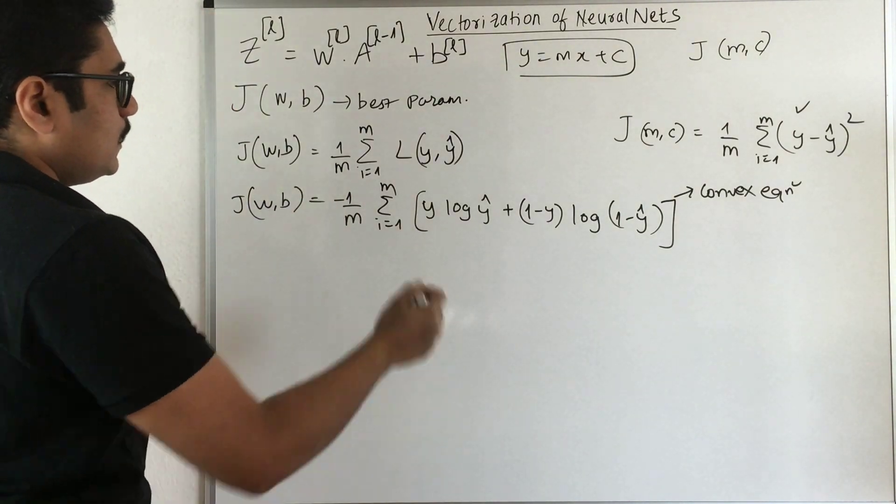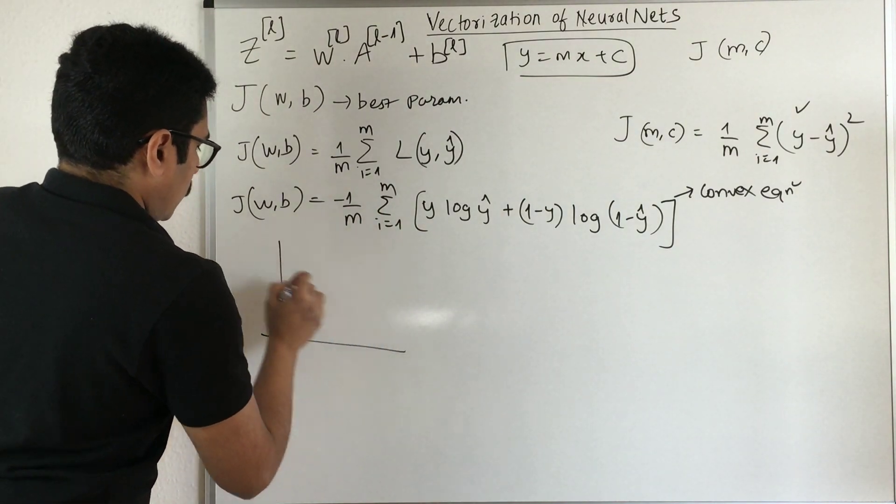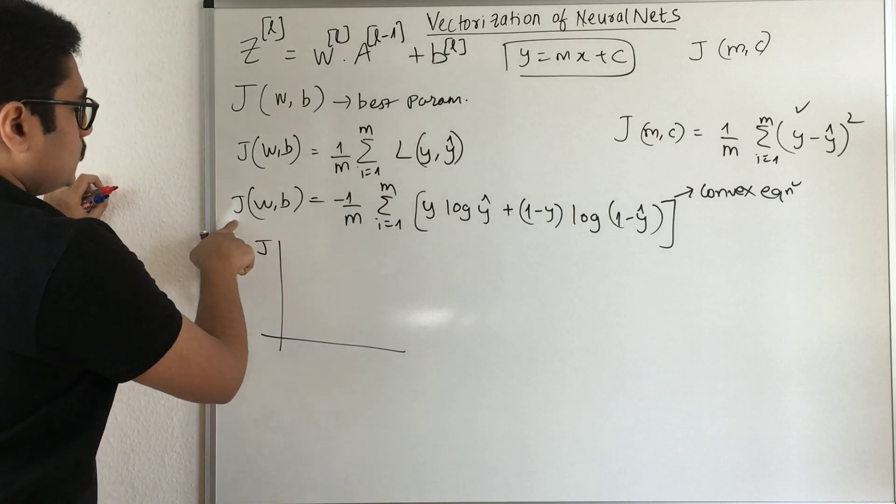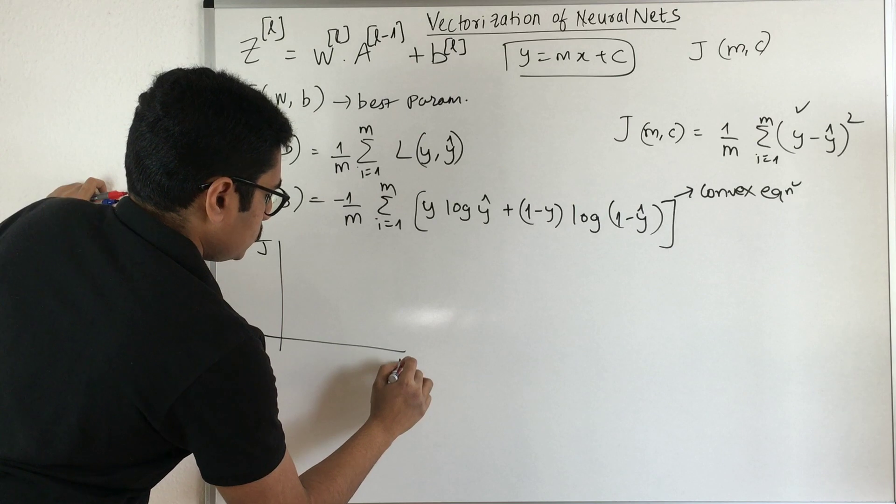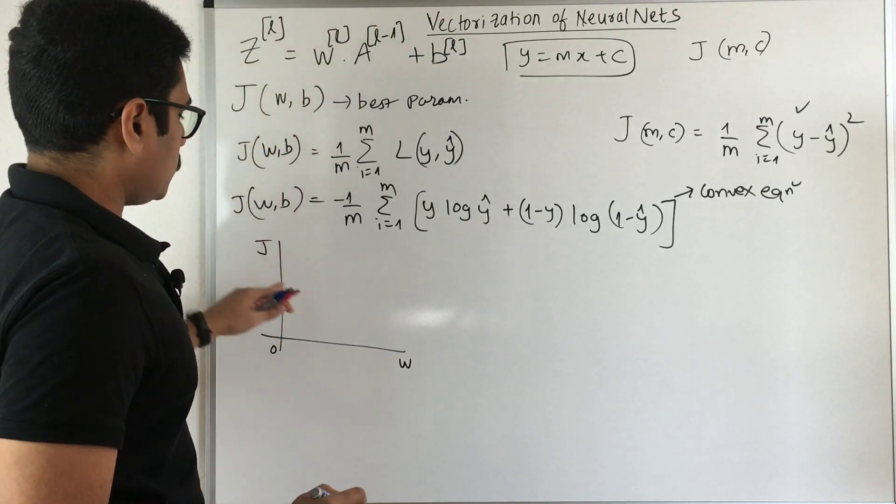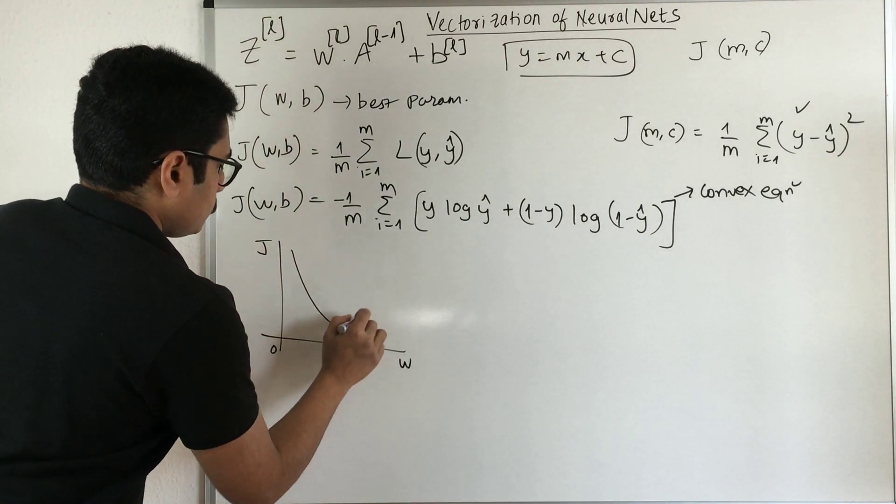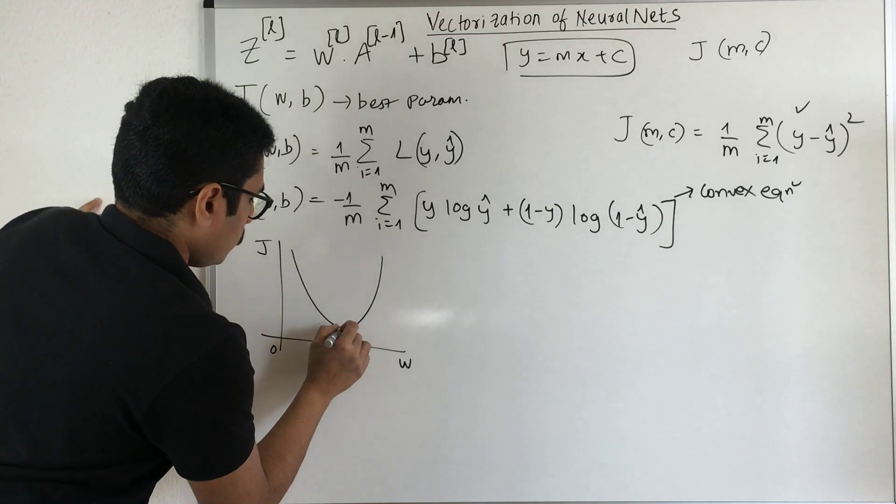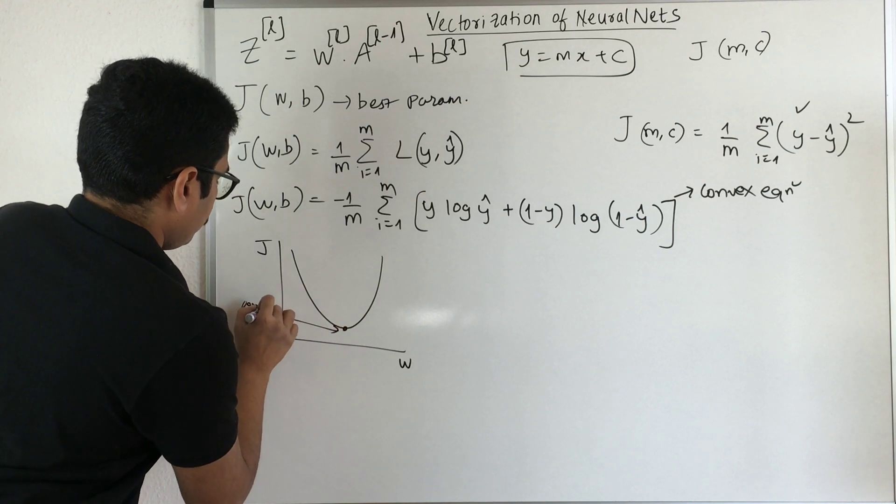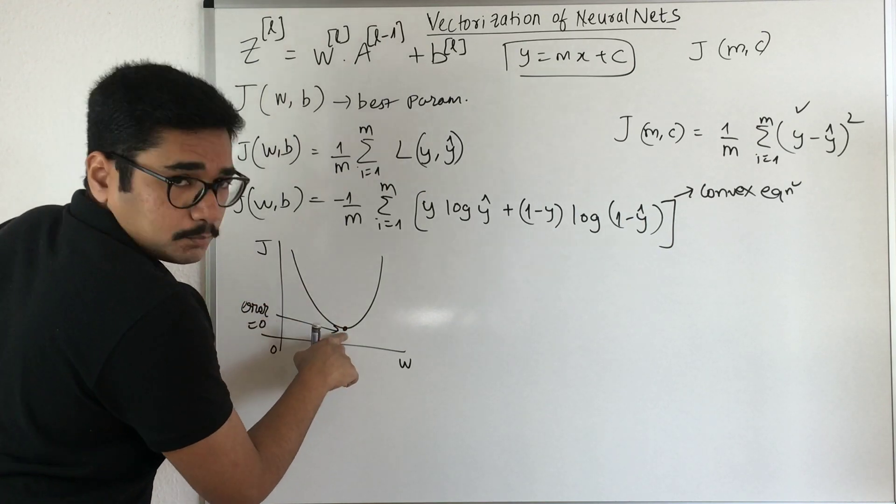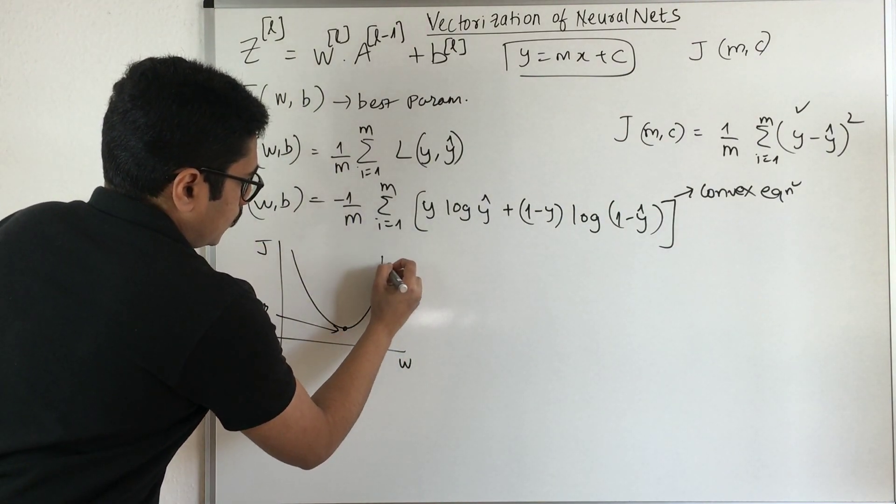I'll give a quick overview of gradient descent. Since our cost J is dependent on two factors, weight and bias, we'll take one parameter J with respect to weight. You get a graph something like this. Our minimum is at this point where the error is zero. Our major goal is to get the minimum error. We start with one particular point.